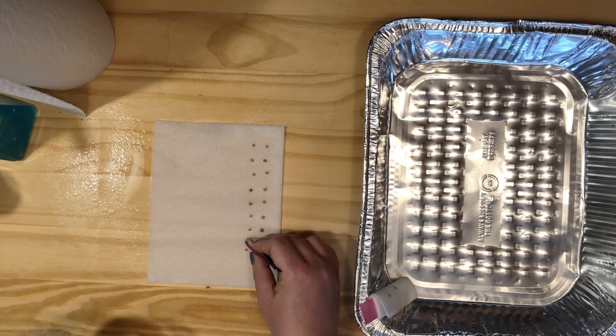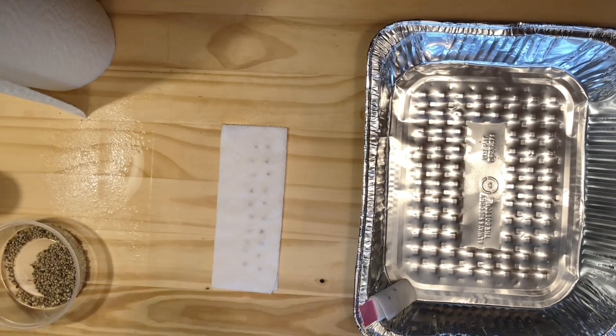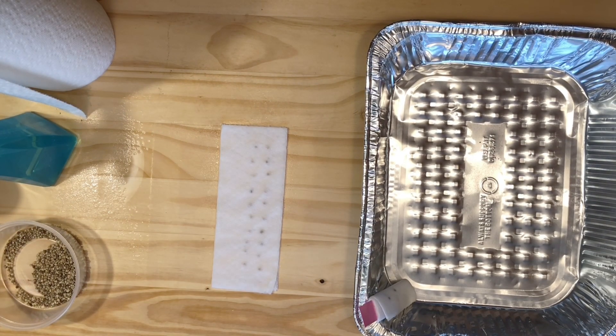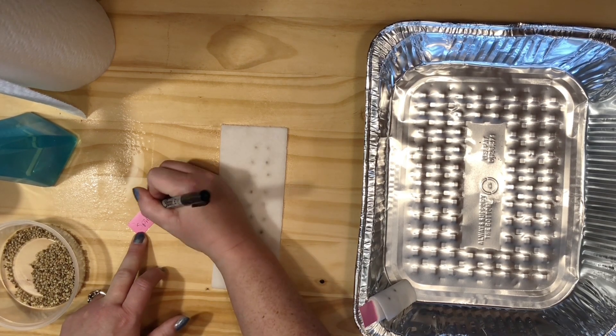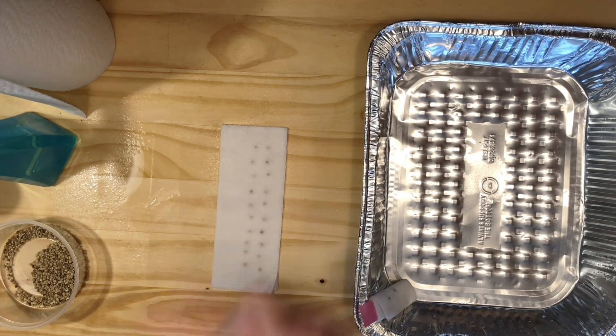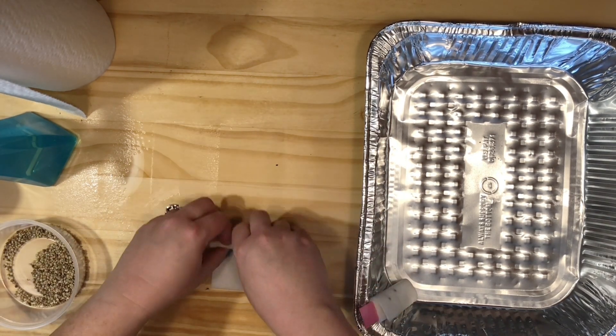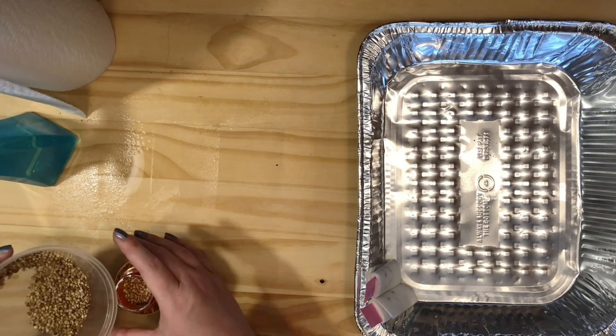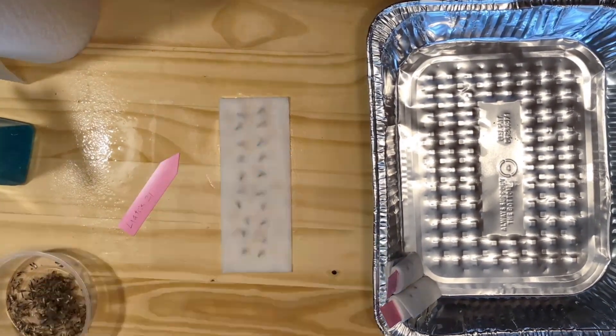To calculate your germination rate, you want to divide the number of seeds that sprouted by the total number of seeds that you started. Then you multiply that number by 100. If you want to keep it easy though, if you test 10 seeds, each one that germinates is 10%, and if you test 20 seeds, each seed that germinates is 5%.